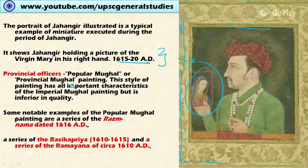Another category is provincial Mughal painting, also called popular Mughal painting. Provincial officers under the Mughal period also recruited painters, but the finest painters were reserved for the imperial court, so the works of provincial painters are inferior in quality even though they share characteristics of Mughal painting. Notable examples include a series of Razm Nama (1660 AD), series of Rasikapriya (1610–1615), and a series of Ramayana (1630).